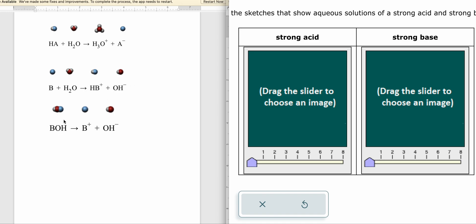If you have a strong base, it's gonna be BOH, and what's gonna happen is that the water portion, the OH minus portion from the water and the B, they're gonna break apart into B plus and OH minus. If it's a strong base, it's gonna 100% break apart. If it's a weak base, you're gonna have some of this here still left.